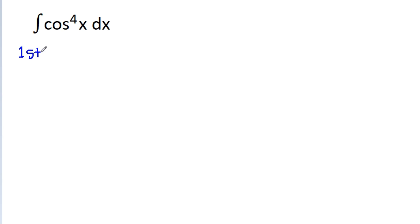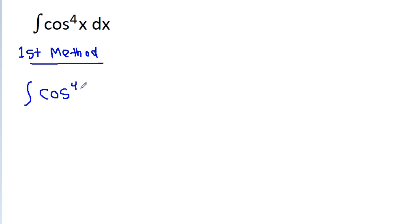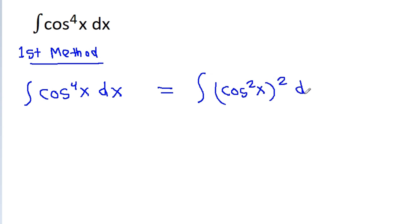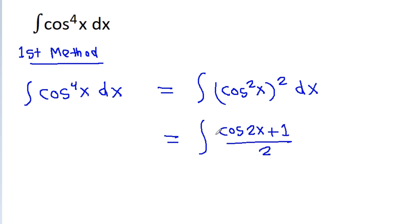The first method is to convert this power 4 to power 1. We have integral of cos power 4x dx, which is the integral of (cos²x)² dx. Since cos²x is equal to (cos2x + 1) / 2, we write it as [(cos2x + 1) / 2]² dx.